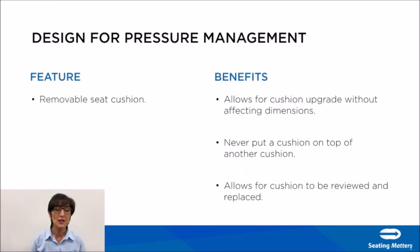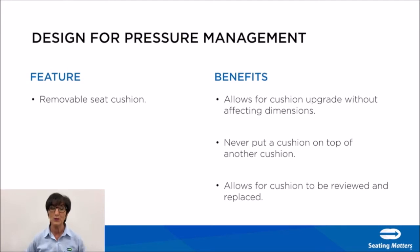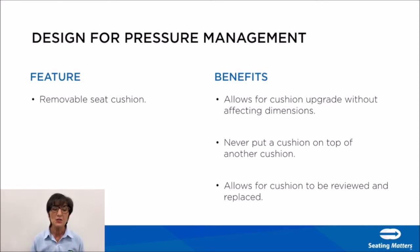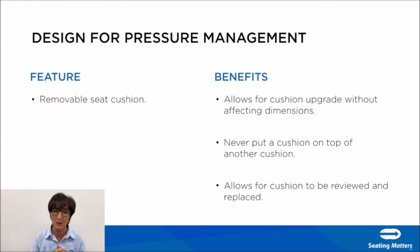A removable seat cushion is an important pressure management feature. It allows for cushion upgrade without affecting the dimensions of the chair. You should never put a cushion on top of a cushion because that causes instability and sliding, affects chair dimensions, makes the arms unreachable, and may alter seat height. A removable cushion can also be reviewed and replaced regularly without replacing the full chair, whereas an integrated cushion that is no longer functional renders the entire chair useless.